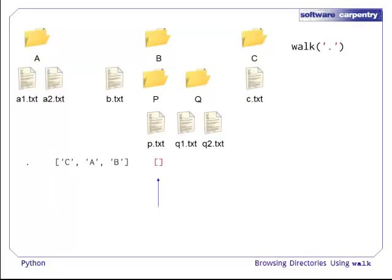Walk then recurses, that is to say it calls itself, using each directory in the current directory, in turn. So, it calls itself on the first directory, which is C. In this case, the path to the directory is dot C. C has no sub-directories, so the directory list is empty. And C has one file, C.txt. As C has no sub-directories, the call to walk on C exits.